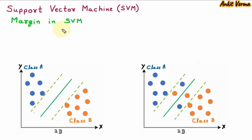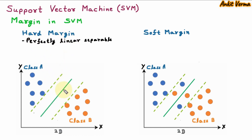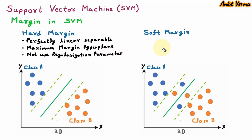Now we are learning margin in SVM. There are two types of margin in SVM. The first is hard margin and the second is soft margin. In hard margin, we have perfectly linearly separable data. Class A data and class B data can be easily separated using the hyperplane or decision boundary. In hard margin, the hyperplane has maximum margin. Since the data points are linearly separable, they do not use a regularization parameter.